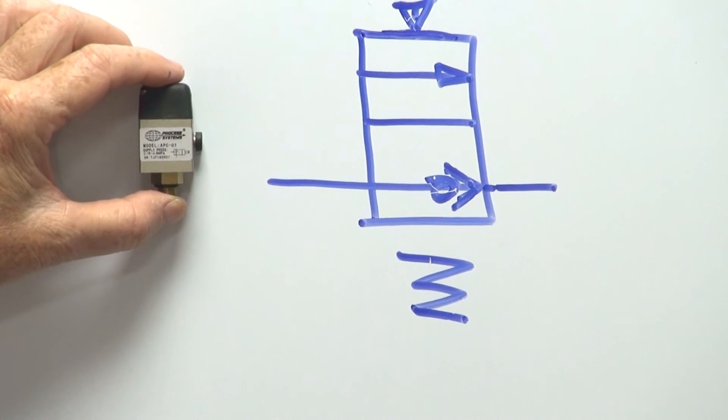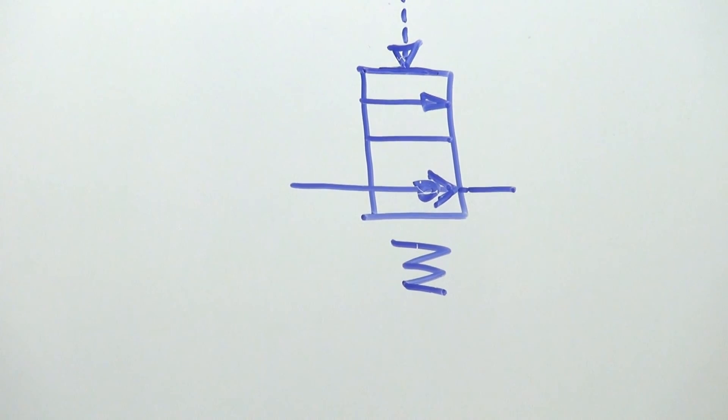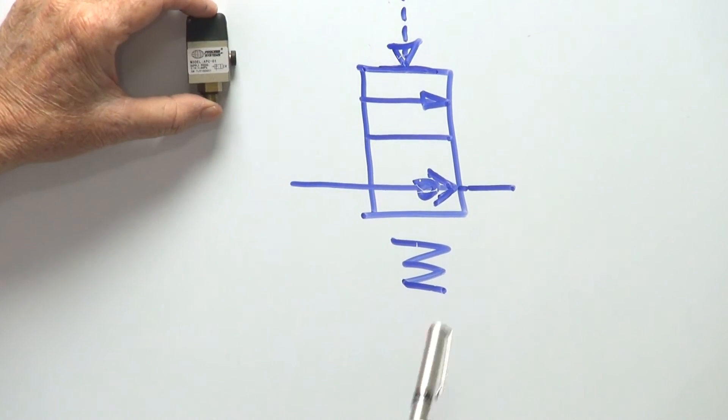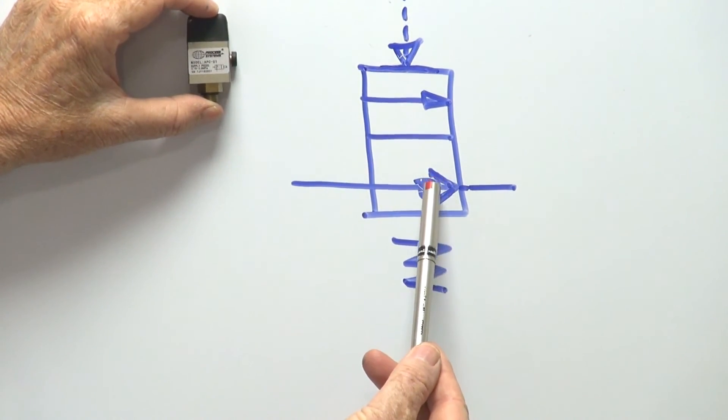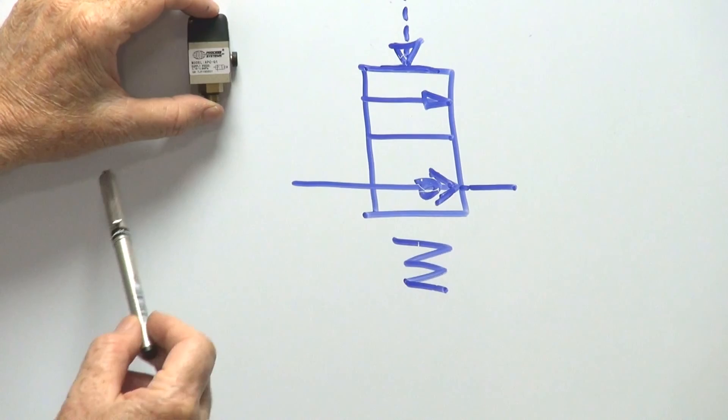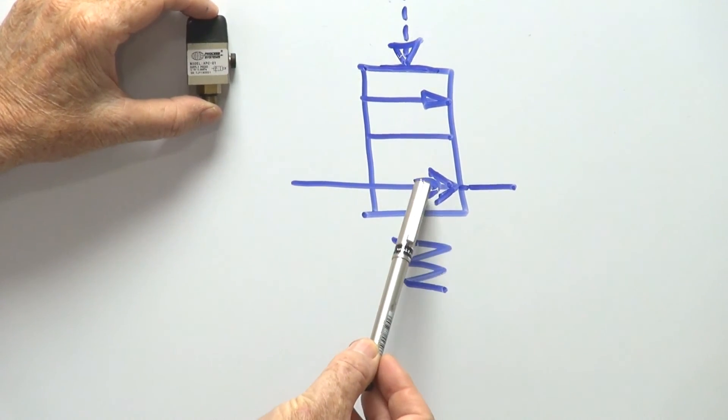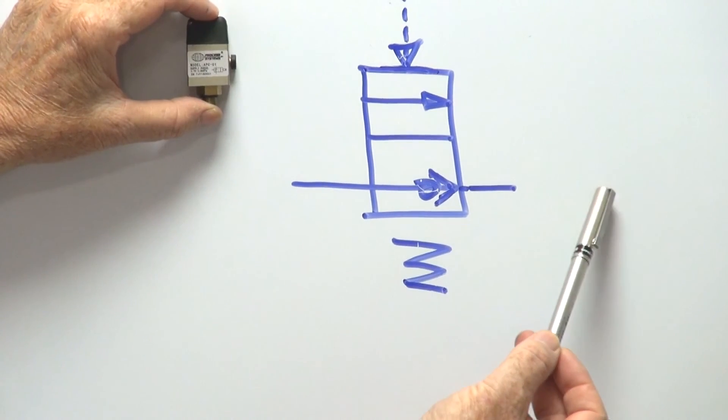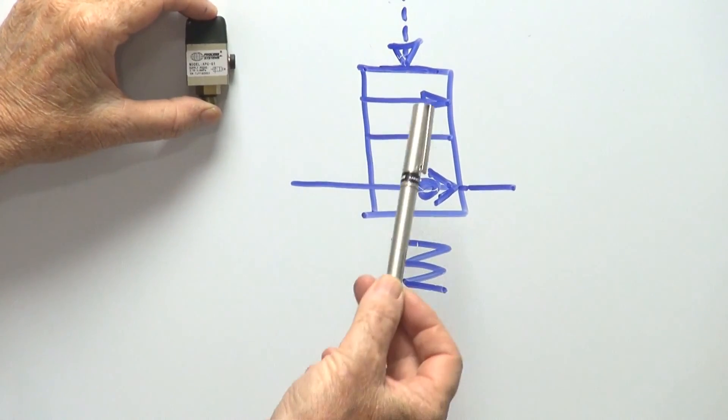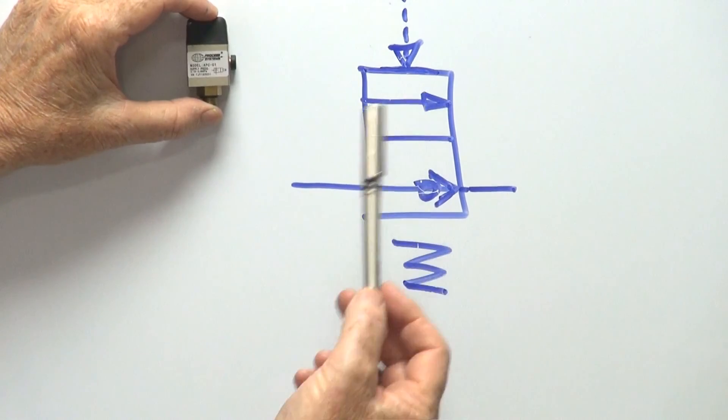As you can see by the symbol, when we get flow back through here, we get free flow in this direction, checked flow. So no flow can go in that direction. It's checked this direction, full flow.